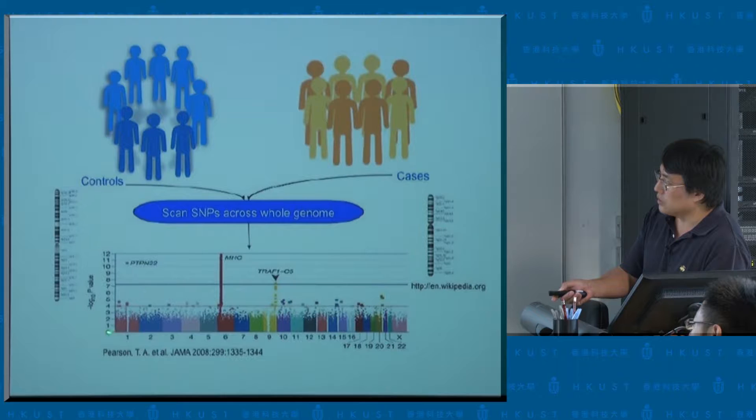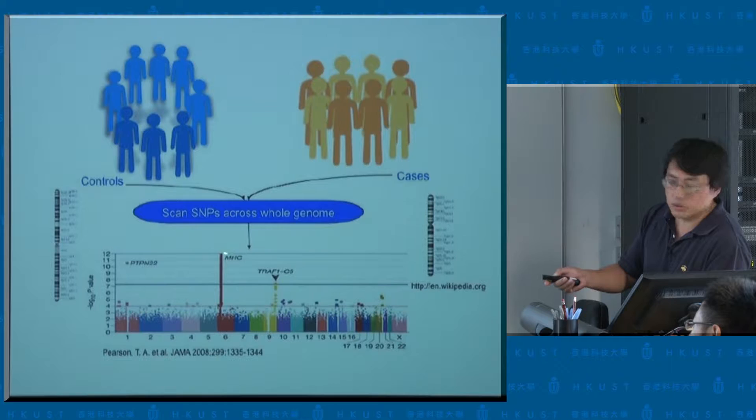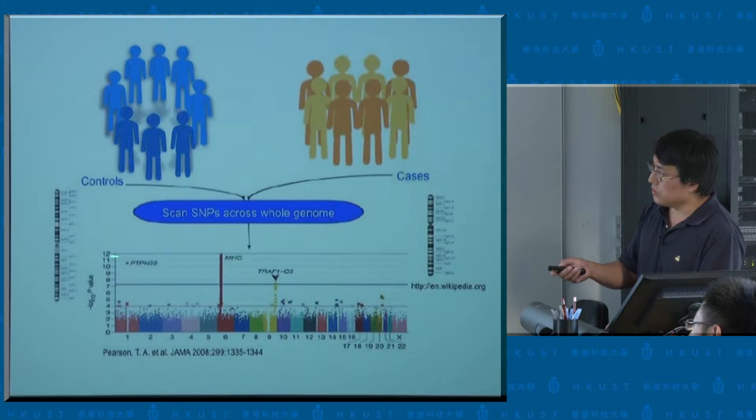The larger the y-axis value, the more evidence you have suggesting association between the marker and the phenotype. In this particular case, MHC relates to immune response — the major histocompatibility locus in the human genome — and this shows up in almost every single immune-related disease people have looked at. This is a typical output from genome-wide association studies.